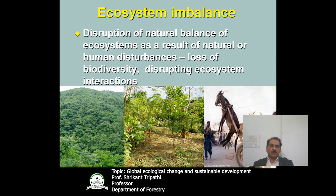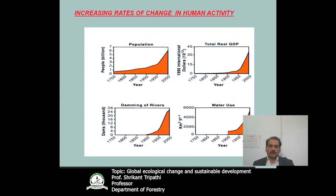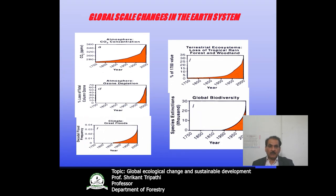Disruption of the natural balance of the ecosystem as a result of natural or human disturbances leads to loss of biodiversity and disrupted ecosystem interactions. Like a donkey hanging on one side of a cart making it imbalance — if you put a load on one side of the ecosystem, it loses harmony. Biodiversity is very important for proper functioning of ecosystems. There is a certain threshold level of biodiversity maintenance below which ecosystems may collapse. If you look at the rise in population, rise in GDP, rise in damming of rivers, rise in water use, rise in CO2 levels, and rise in global biodiversity loss — everything shows a sharp rise after 1950.